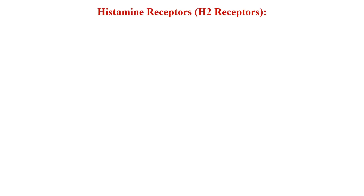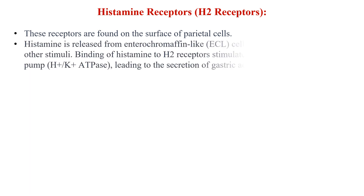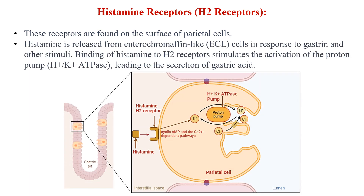Before we start exploring H2 receptor blockers, let's understand what H2 receptors are. As studied in our previous video, these tiny receptors are present on the surface of parietal cells in your stomach lining and play a vital role in controlling gastric acid production. Histamine is released from enterochromaffin-like cells in response to gastrin and other stimuli. Binding of histamine to the H2 receptor stimulates activation of the proton pump — the H+/K+ ATPase pump — leading to secretion of gastric acid, as this proton pump exchanges hydrogen and potassium ions across the parietal cells.